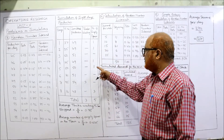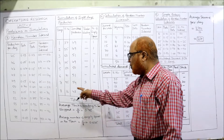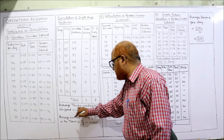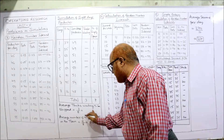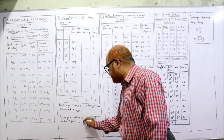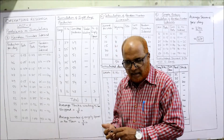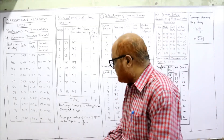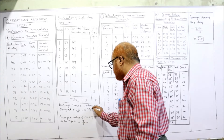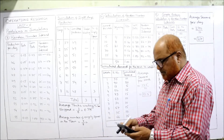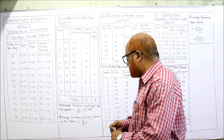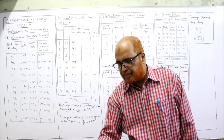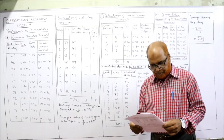Taking totals over eight days: total trucks waiting is 3, and total empty spaces is 7. Average waiting trucks = 3 ÷ 8 = 0.375. Average empty spaces = 7 ÷ 8 = 0.875. This is the end of problem number three.